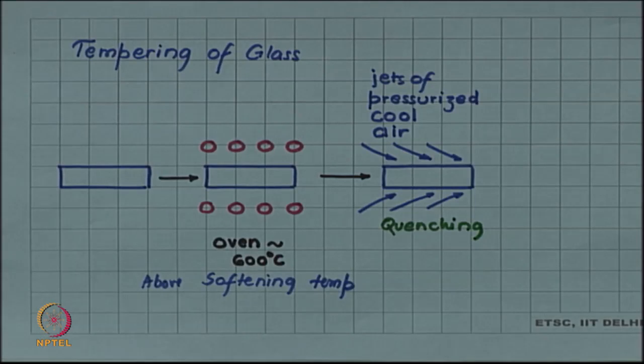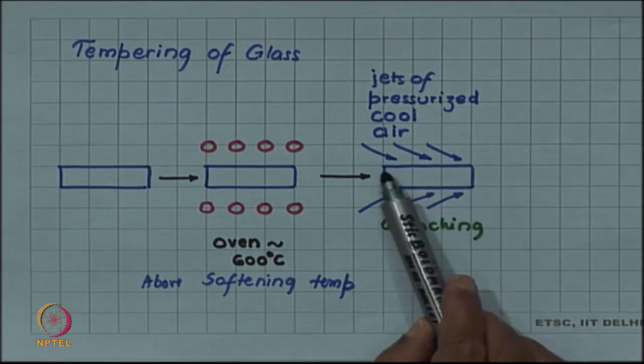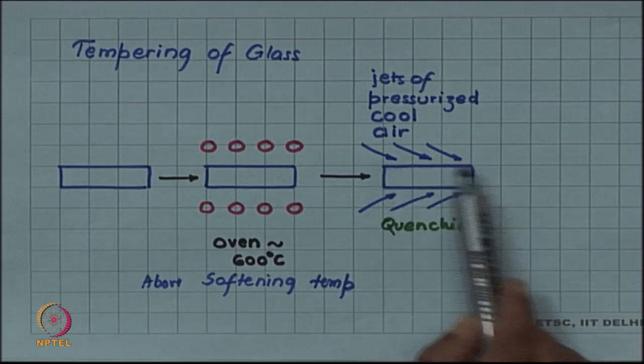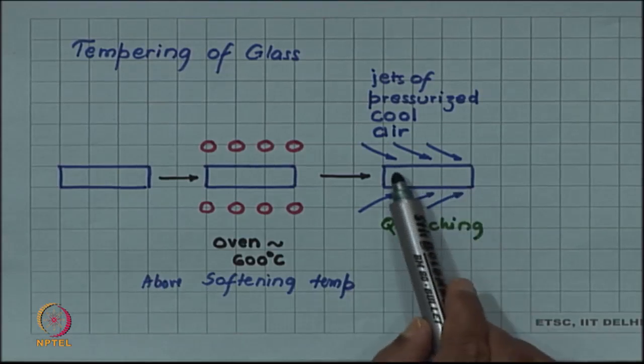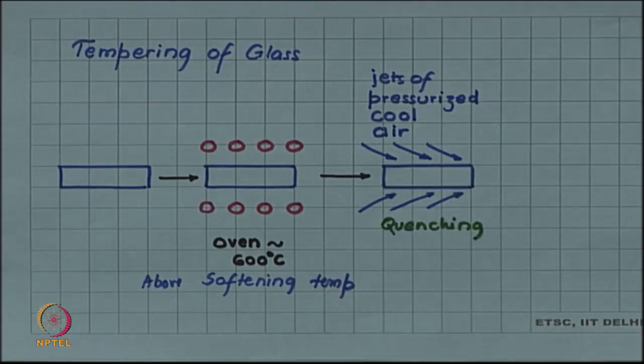Due to quenching, a thin surface layer - because cooling is very rapid and for a very short duration - cools quickly and forms a hard glass.